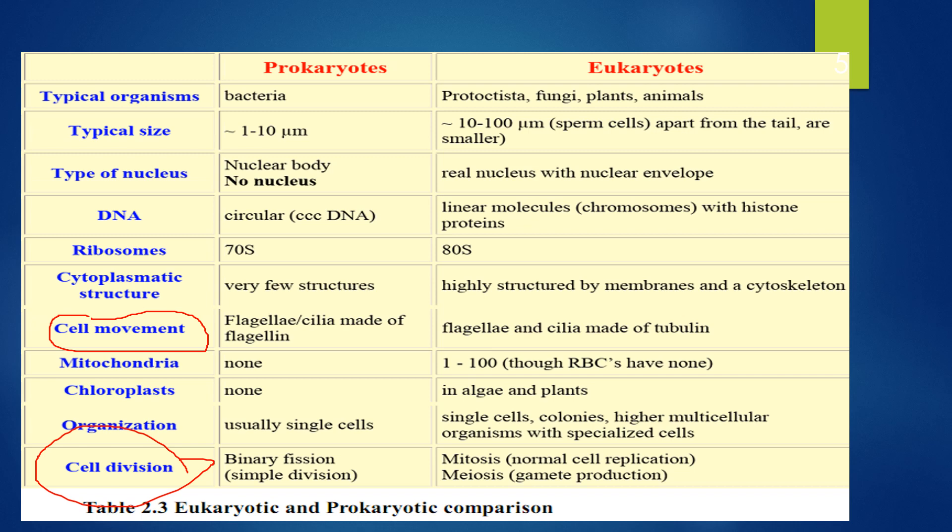In meiosis, the chromosome number is divided by half and half. This percentage is divided in half, which means a reduction in chromosome number occurs in meiosis.